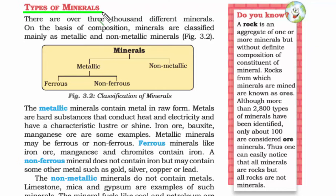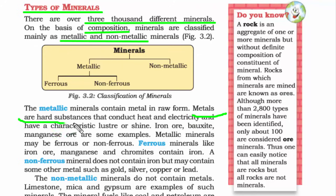We have more than 3,000 types of different minerals, but to classify them we need to understand their composition. Broadly, minerals are classified into two categories: metallic and non-metallic. Metals are hard substances and are very good conductors of heat and electricity. That's why we use metallic utensils to cook food and copper wires for transferring electricity. Metals also have a characteristic lustre or shine. Some examples of metals are iron ore, bauxite, and manganese.